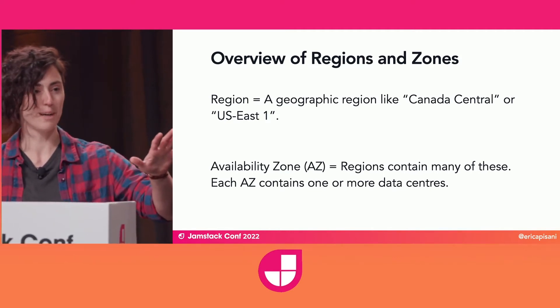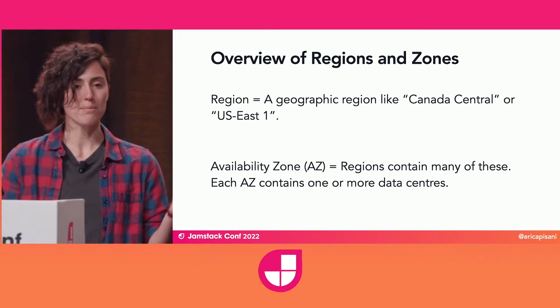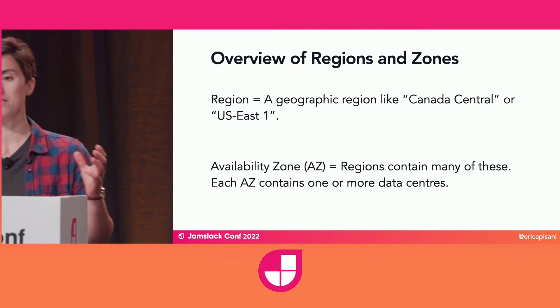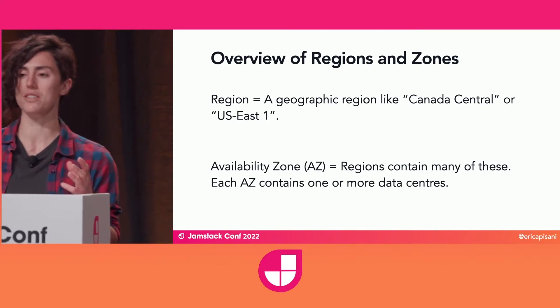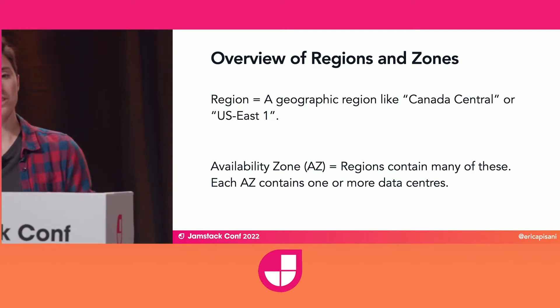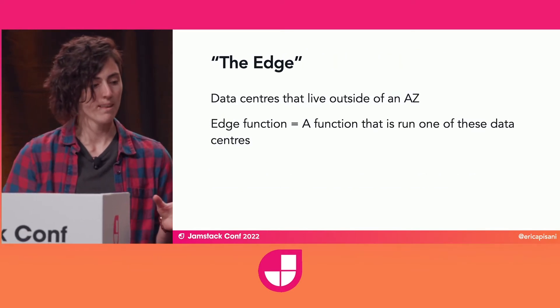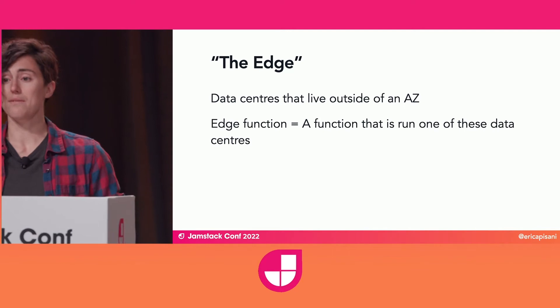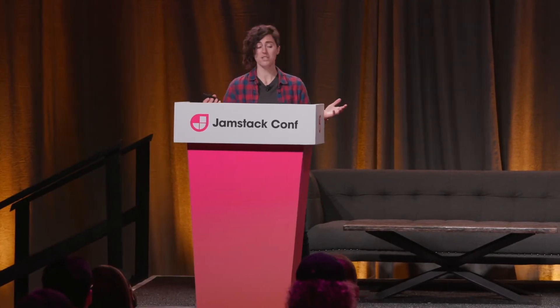Don't worry — this will be very brief. On the broadest possible scope, most cloud providers have these organized by region — think your US East 1, your Canada Central. Within each of these regions, there are multiple availability zones. When we talk about an origin server, it is usually hosted at one of these availability zones. The Edge are data centers that live outside one of these AZs, with an Edge function being a function that is run on one of these data centers. You might also see the term points of presence or edge locations to refer to these, depending on the cloud provider.